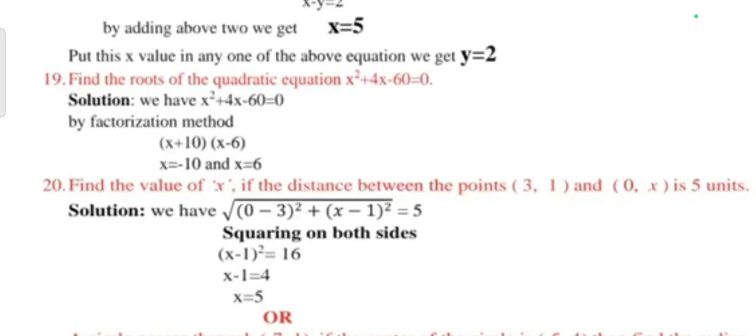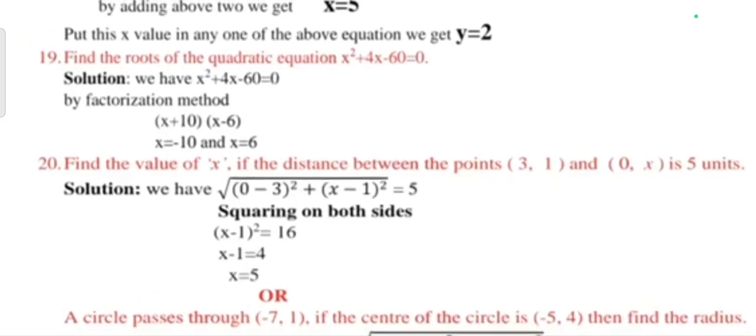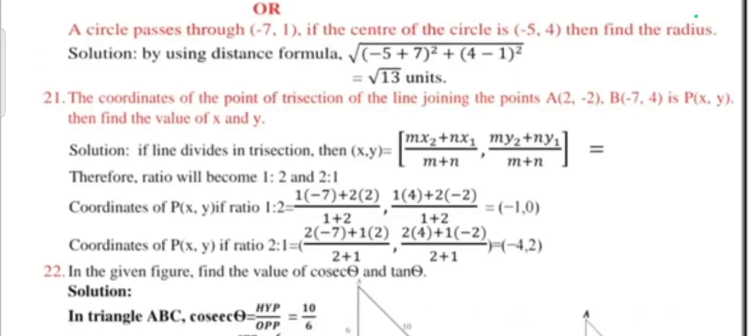Question 19: Find the roots of the quadratic equation x² + 4x - 60 = 0. Take screenshot. Question 20: Find the value of x if the distance between the point (3, 1) and (0, x) is 5 units. We have to put distance formula: square root of (x2 - x1)² + (y2 - y1)². Or another question: The circle passes through (-7, 1). If the center of the circle is (-5, 4), then find the radius. Answer is by distance formula you'll get √13 units.